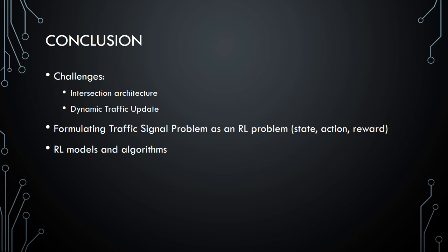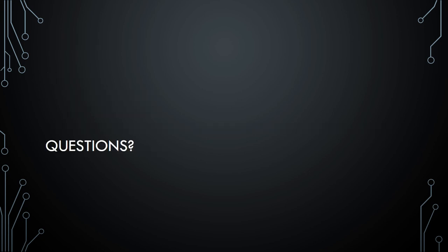In conclusion, the challenges are intersection architecture and dynamic traffic update. We have formulated the traffic signal problem as a reinforcement learning problem in terms of state, action and reward. We have visited several reinforcement learning models and algorithms which have been published. Thank you for being patient. Any questions?